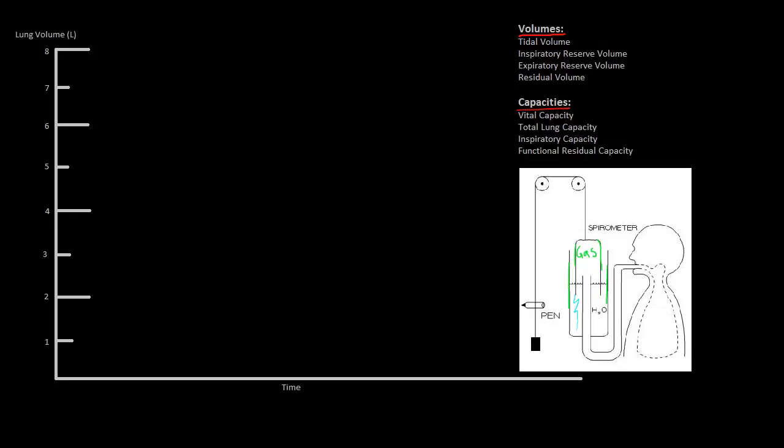Let's say we have a patient hooked up to our spirometer. At rest, that patient will have somewhere between two and a half to three liters of gas in their lungs. As the patient inhales, the pen on the paper will rise and cause an uptick in the graph. As the patient exhales, the pen will drop and we'll get a downtick. Recall that inhalation is active — by increasing the volume in our thoracic cavity through diaphragm contraction and intercostal muscles — while exhalation in normal everyday breaths is passive, where the elasticity in the lung returns us back to our pre-inspiratory volume.